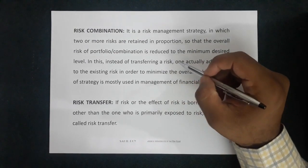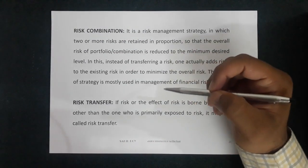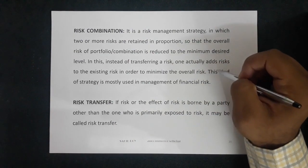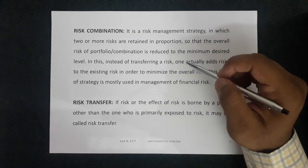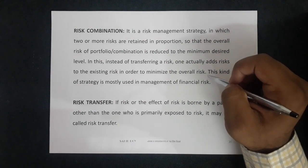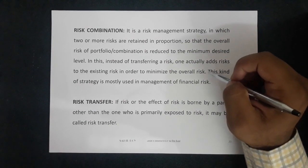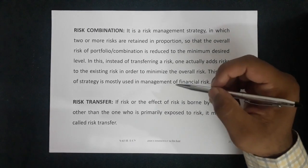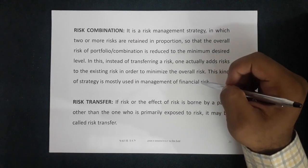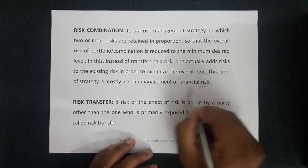In risk combination, instead of transferring a risk, one actually adds risk to the existing risk in order to minimize the overall risk. You can't transfer the risk here; rather, certain other elements ensure you have less loss. This kind of strategy is mostly used in the management of financial risk — it relates to portfolio management.